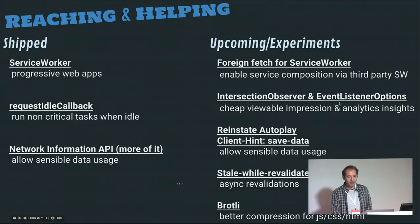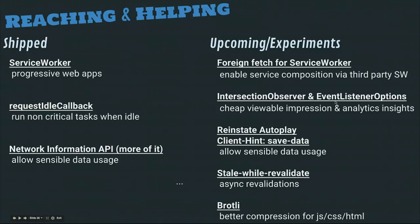We also learned that people want to know what the user is doing on the website so they can help publishers optimize content — they want to know whenever the user scrolls but don't actually need to call preventDefault. So we are working on a new API called Event Listener Options where you can say: I want to know when something scrolls but I don't intend to call preventDefault, so just run the scrolling on the compositor.